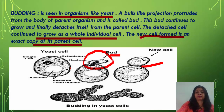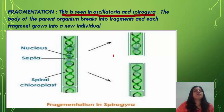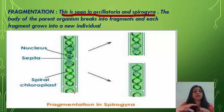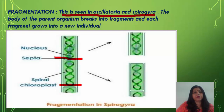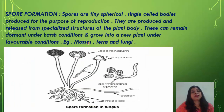Fragmentation is seen in Oscillatoria and Spirogyra. Spirogyra is a filamentous alga — filamentous means thread-like structures. The body of the parent breaks into fragments, and each fragment grows into a new individual. So if it breaks into three parts, each of those three fragments will grow into a new individual.